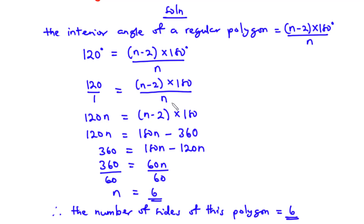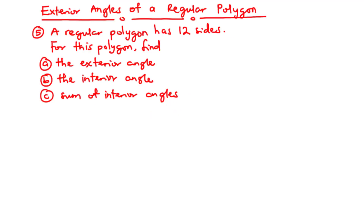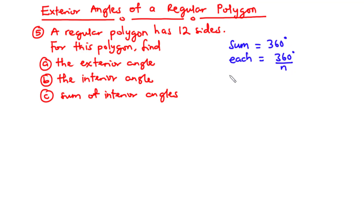Now let's discuss the exterior angles of a regular polygon. The sum of exterior angles of a regular polygon equals 360 degrees. Since all exterior angles are equal, each exterior angle is given by 360 degrees divided by N.